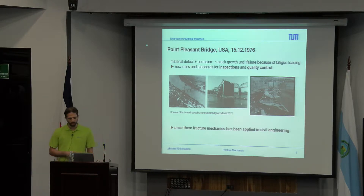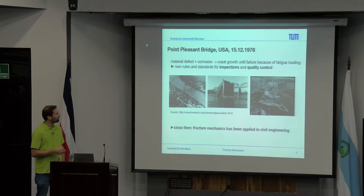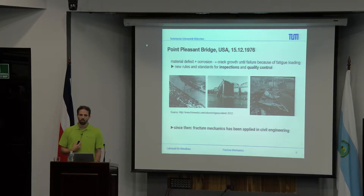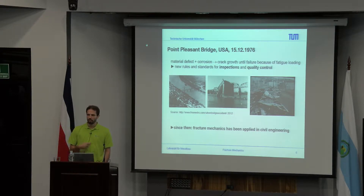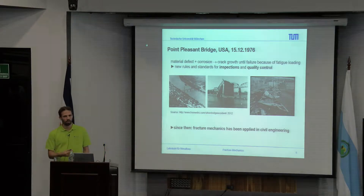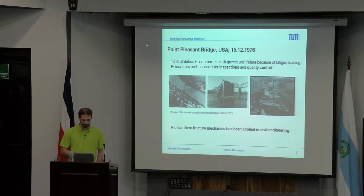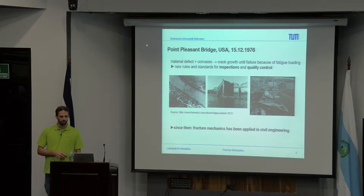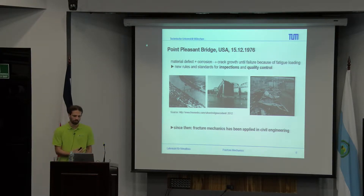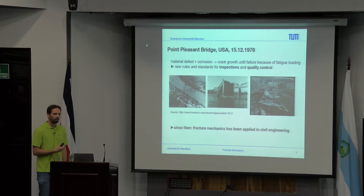In the case of civil engineering, there was the Point Pleasant bridge in the USA which failed in 1976, during December. There was a material defect, some corrosion, and the crack grew until failure due to fatigue loading but also due to defects and corrosion. The bridge just broke down. The resulting outcome was that new rules and standards for inspection and quality control were set up. Since then, fracture mechanics has been applied in civil engineering.